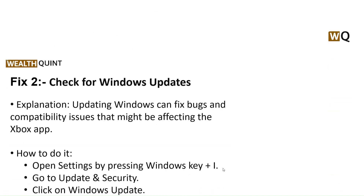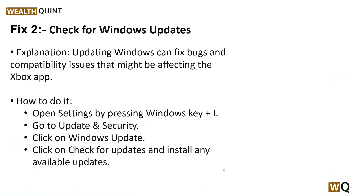The second step is to check for Windows updates. Updating Windows can fix compatibility issues that might be affecting the Xbox Game Pass app. To do this, open Settings by pressing Windows key + I, go to Update and Security, click Check for Updates, and install any available updates.